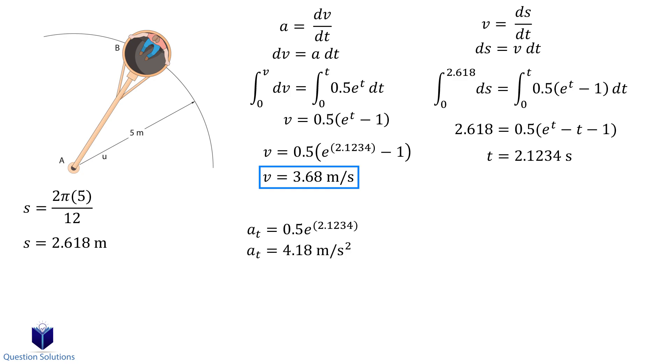Now for normal acceleration. Using our normal acceleration equation, we only need to plug in the values since we already found everything. We know the velocity and we know the radius. So solving gives us the normal acceleration. The magnitude can be found using this equation. Solving gives us our answer.